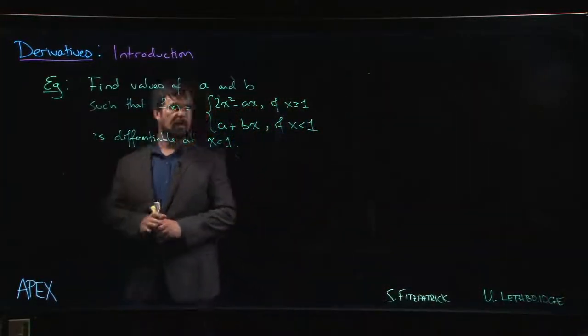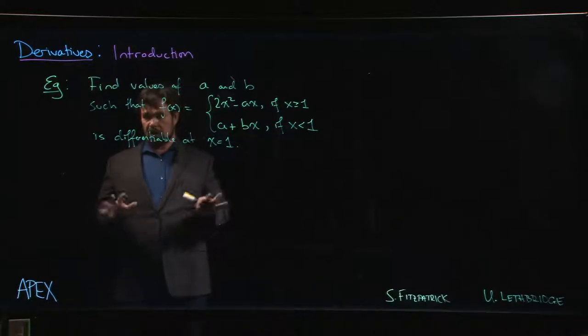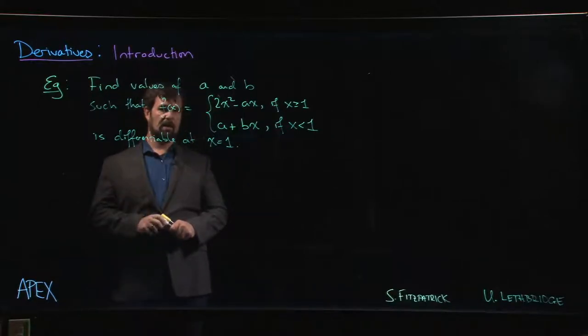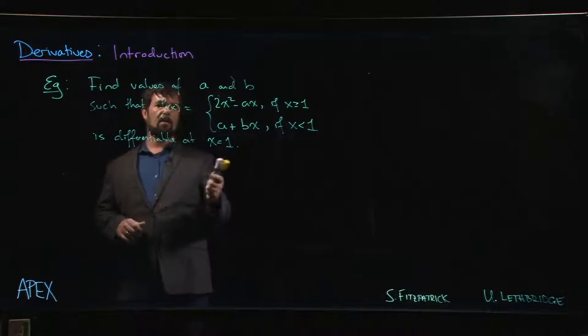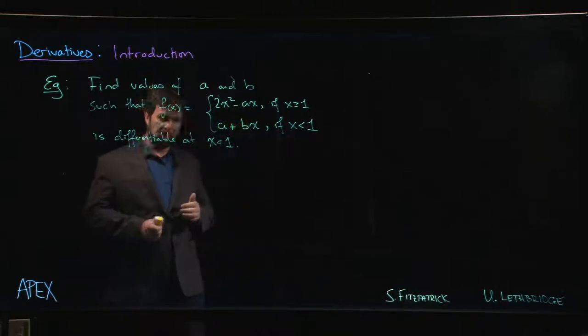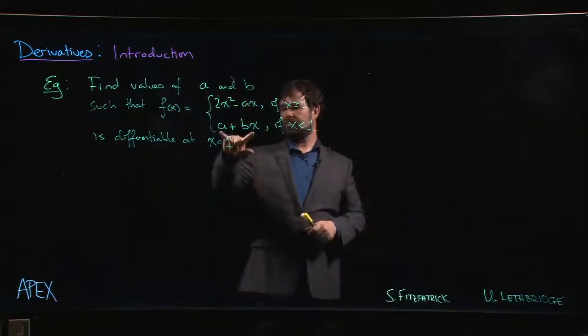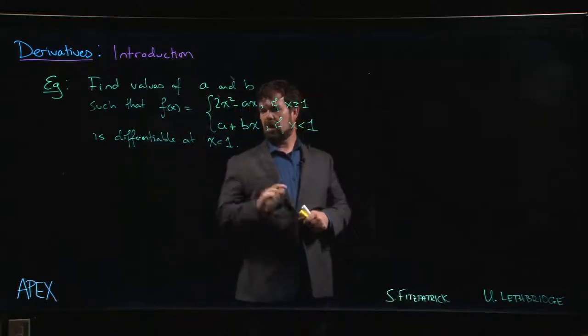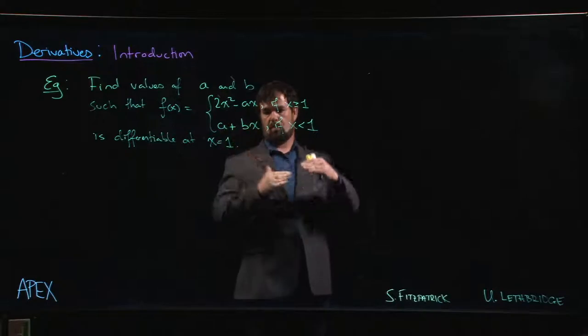Here's a problem making use of the definition of the derivative, maybe slightly more theoretical this time. We've got a piecewise defined function with a couple of unknown parameters, a and b. For x less than one, it's just a straight line. What we're trying to do